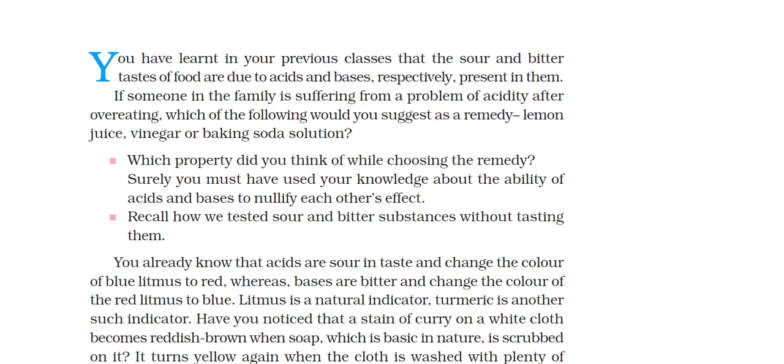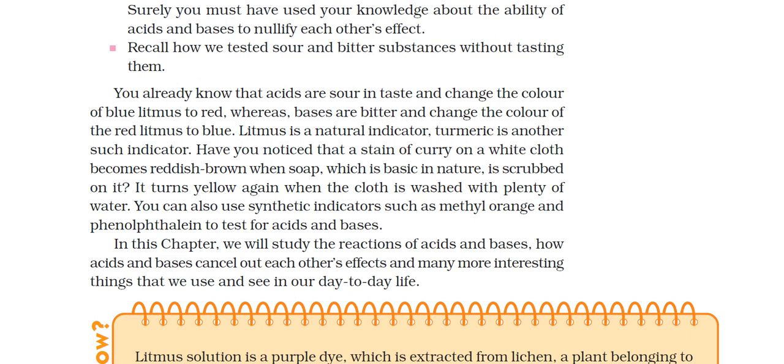Now recall how we have tested the sour and bitter substances. How can you find the sour or bitter substance without tasting it? We already know that acid is sour. If you check the color change in litmus, it will convert to red or change to red.